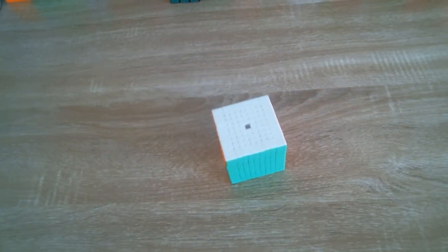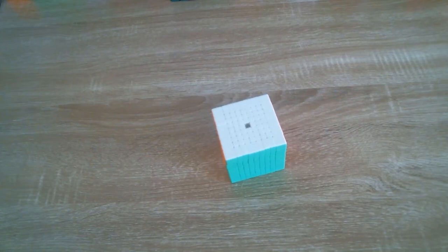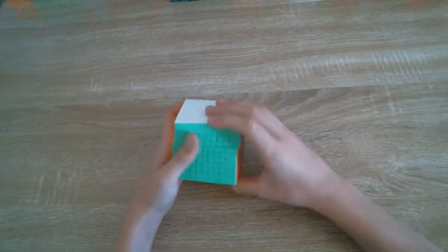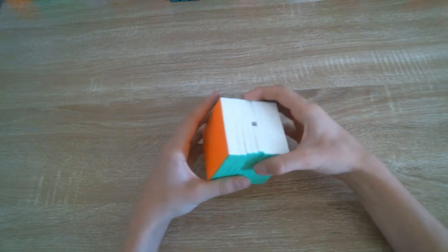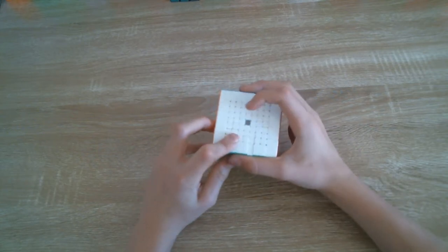And to finish off the NxNs, we have my Meilong 9x9 which is like not that big. I solve it maybe like three times a year and it's missing a white center cap. Now I've finished with all my NxNs so we're going to move on to the side events, starting with...